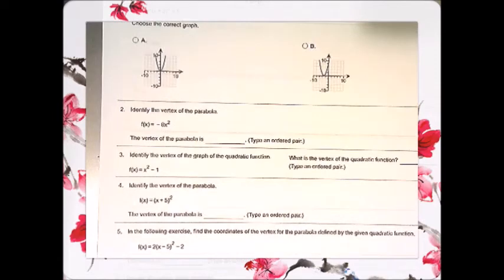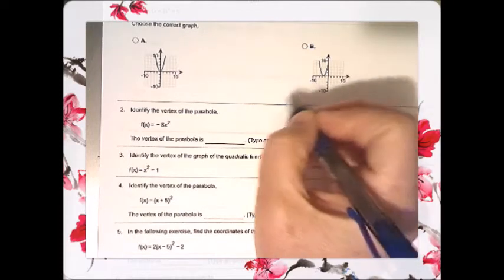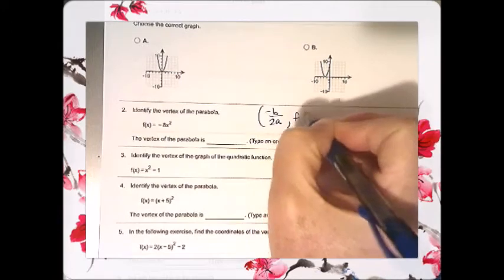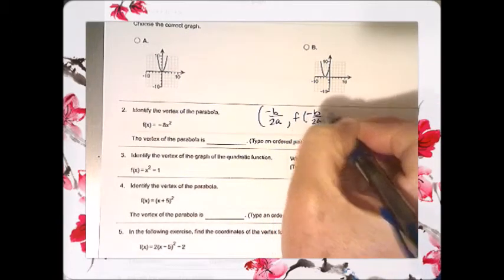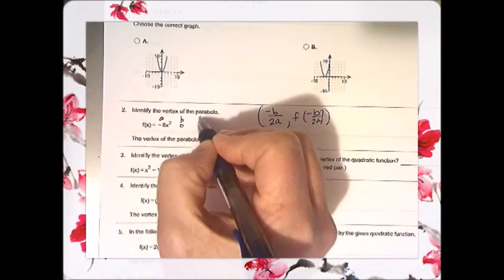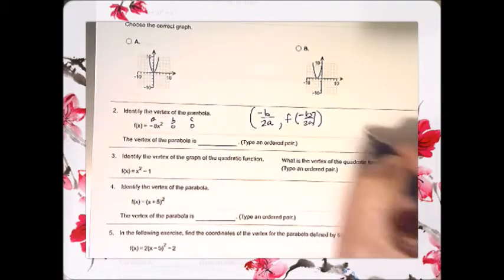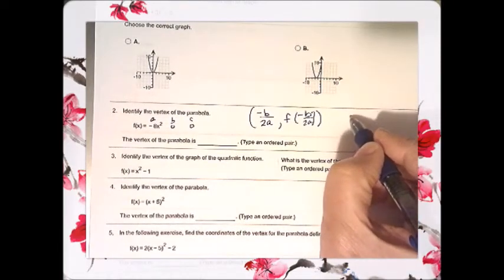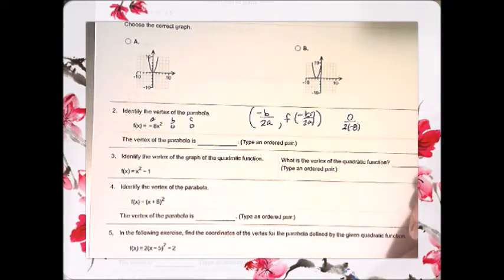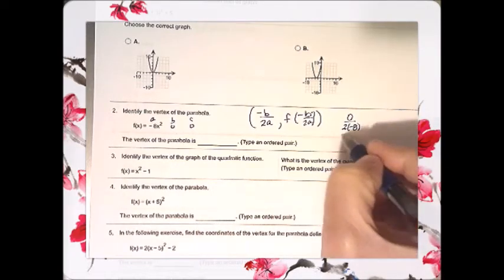Then it says, identify the vertex of the parabola in number 2. And they're wanting you to remember that you have vertex. One way to find the parabola is to use the formula negative b over 2a and then f of negative b over 2a. And we know that this is a, b is 0, and c is 0 in this particular problem. So, when we have negative b, that would be negative 0, which is just 0, over 2 times negative 8.